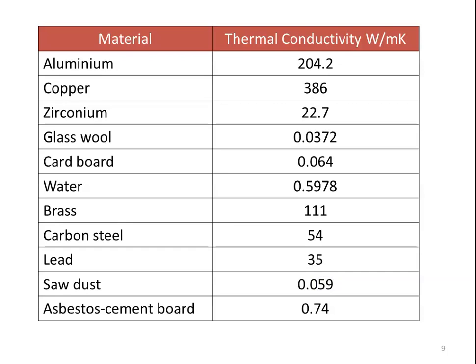The thermal conductivity is the influencing parameter for heat transfer — higher the thermal conductivity, the more the heat conduction. Copper has the highest thermal conductivity of 386 watts per meter Kelvin, aluminium is next at 204.2 watts per meter Kelvin. Other materials: water, brass at 111, lead. Some insulating material at 0.74, and cardboard at 0.064 watts per meter Kelvin. Materials with higher thermal conductivity are good conductors; materials with lower thermal conductivity are bad conductors or insulating materials.